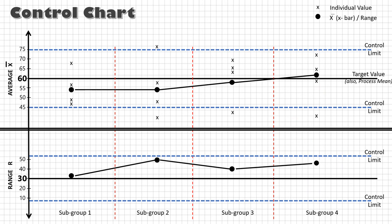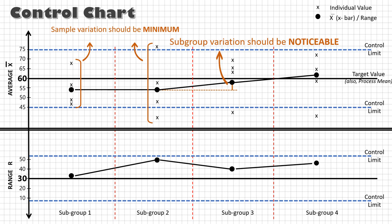A point to remember in the sampling plan: to get fairly accurate results, we want the variation within a sample to be minimum, and at the same time we want the variation between the subgroups to be maximum so that a shift can be easily identified.